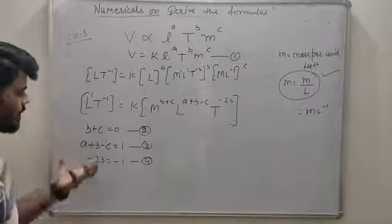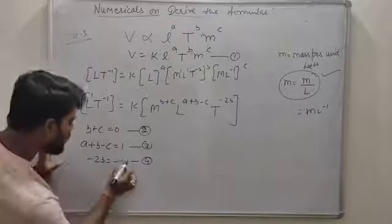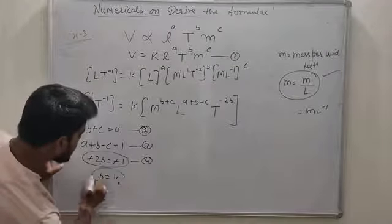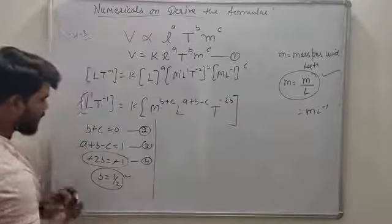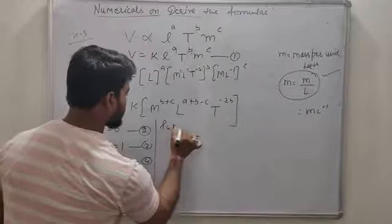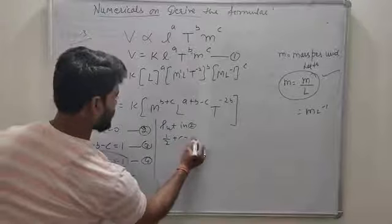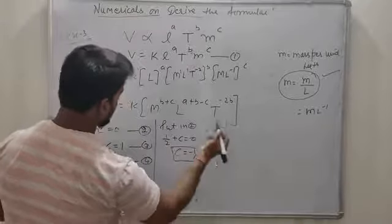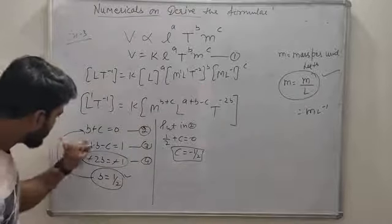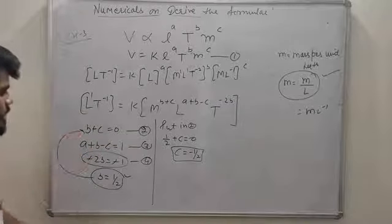जो equation पहले solve करना सीखिए जो direct values दे — यहाँ से minus-minus cancel होकर B की value 1/2 आएगी। B की value यहाँ apply करने पर C की value minus 1/2 आएगी: 1/2 plus C is equal to 0 — C is equal to minus 1/2।